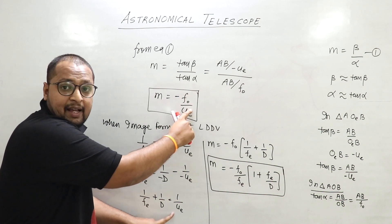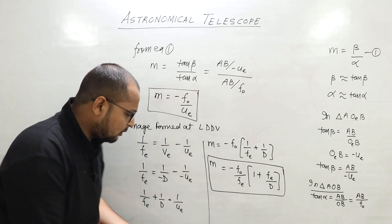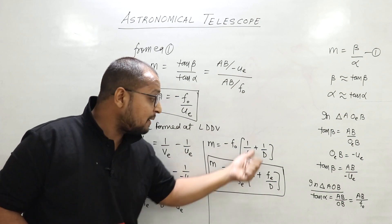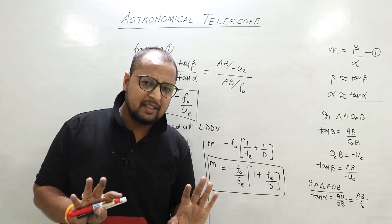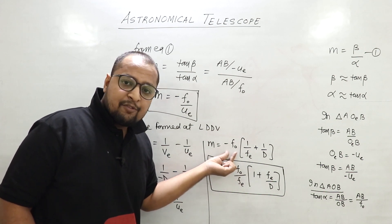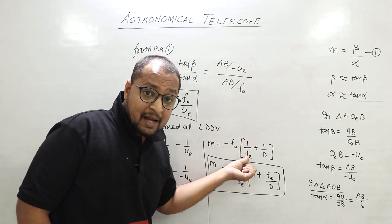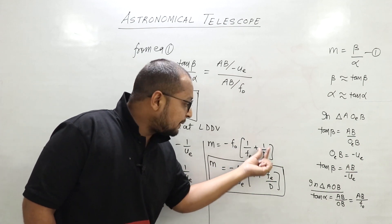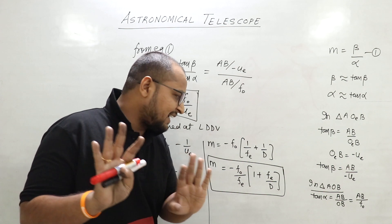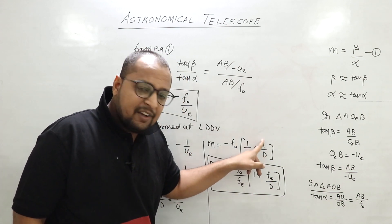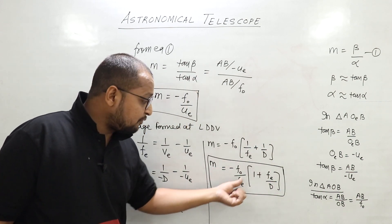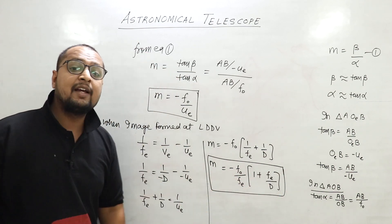Now observe carefully — 1/ue is here. So I take 1/ue and substitute it into the equation. What comes? minus fo. The value of 1/ue becomes 1/fe + 1/d. Now adopting the book format: take fe as common. When fe is taken common, it comes out, and we get 1 remaining. Some students get confused — this is a maths issue, not physics. Multiply and divide by fe; fe comes common, fe remains on top, so we get fe/d. Therefore m = minus fo/fe × (1 + fe/d). This is the magnification formula.